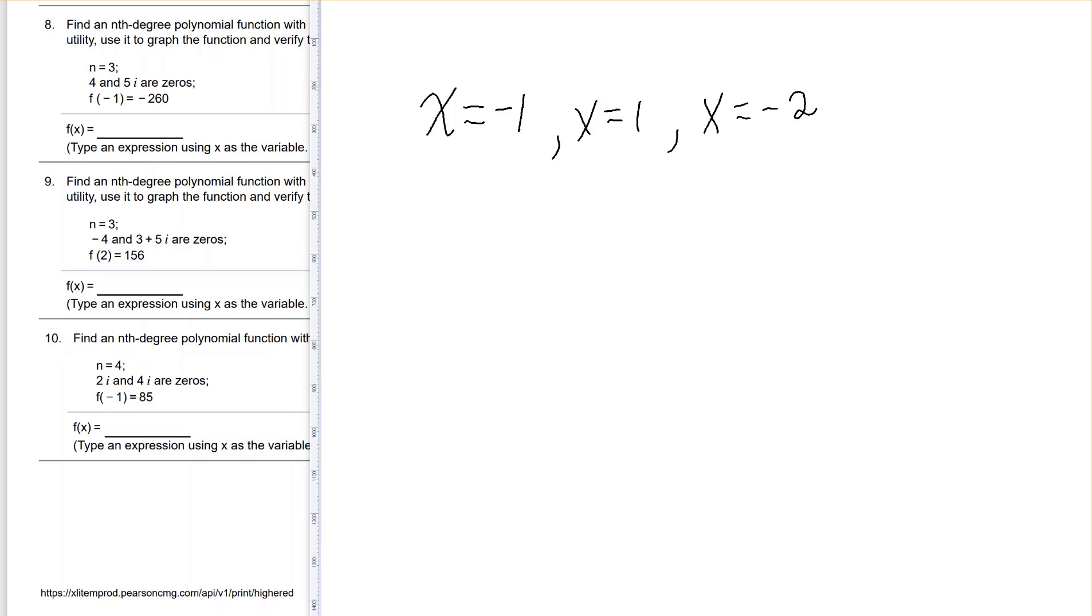We also know that it's a third degree polynomial. That means the highest exponent is going to be x to the third. And the last thing they gave us is that f of 2 is negative 24.